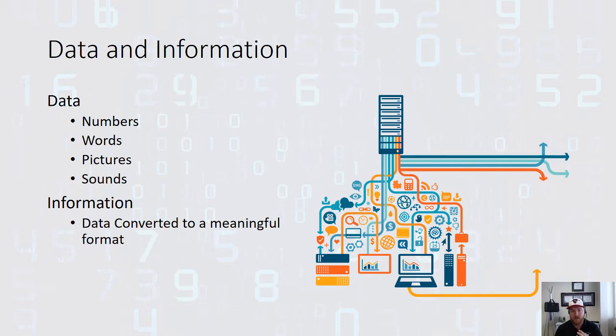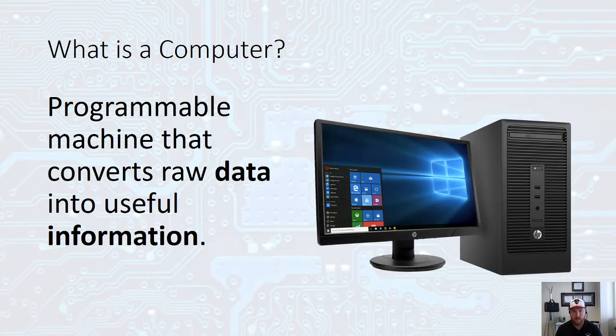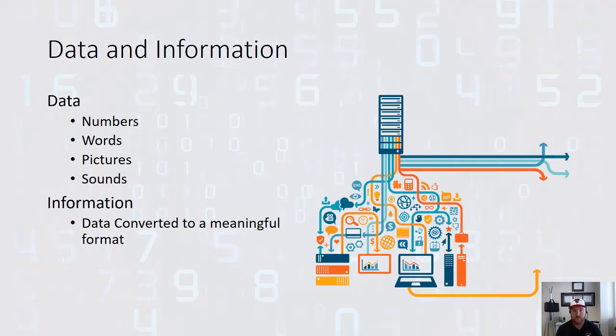Raw data is numbers, words, pictures, and sounds. So it takes those numbers, words, pictures, and sounds and converts them into useful information.